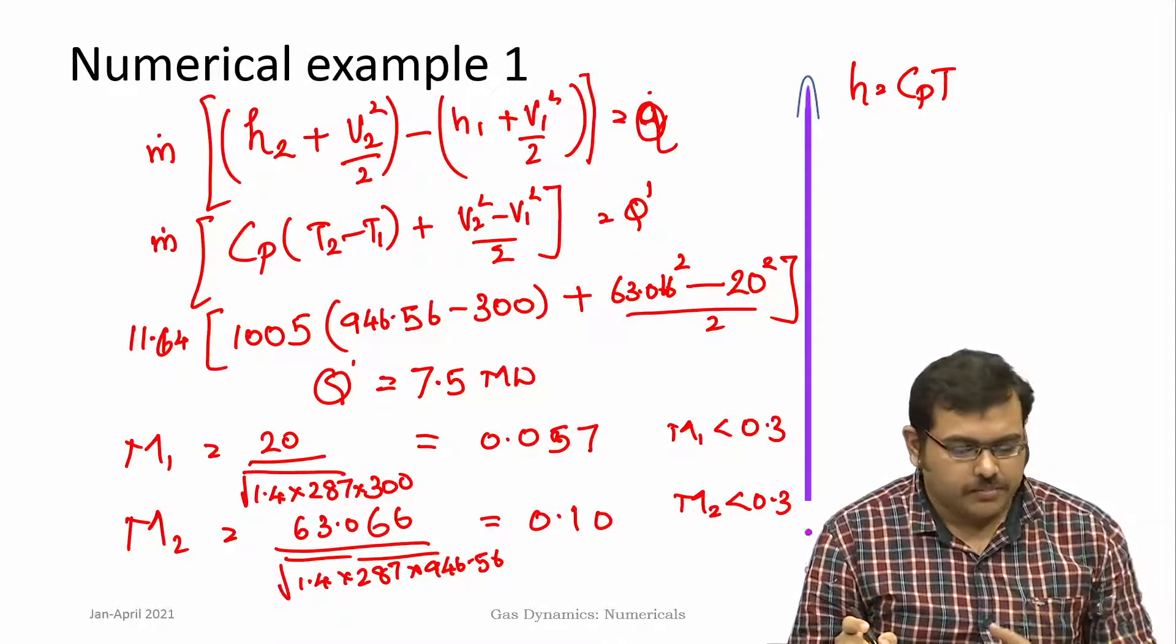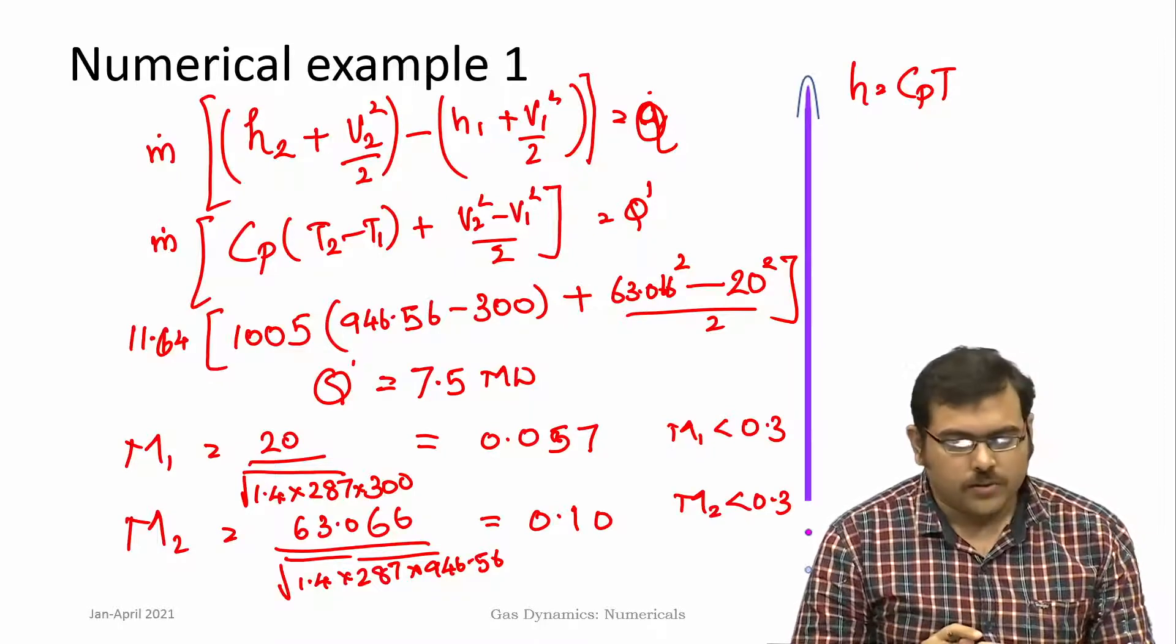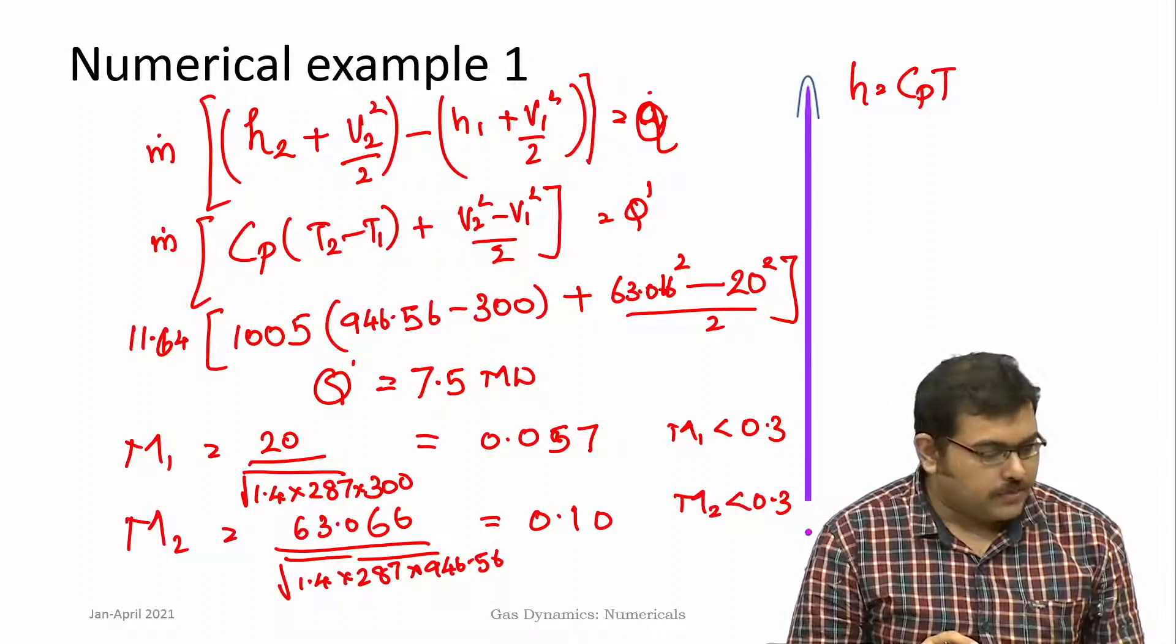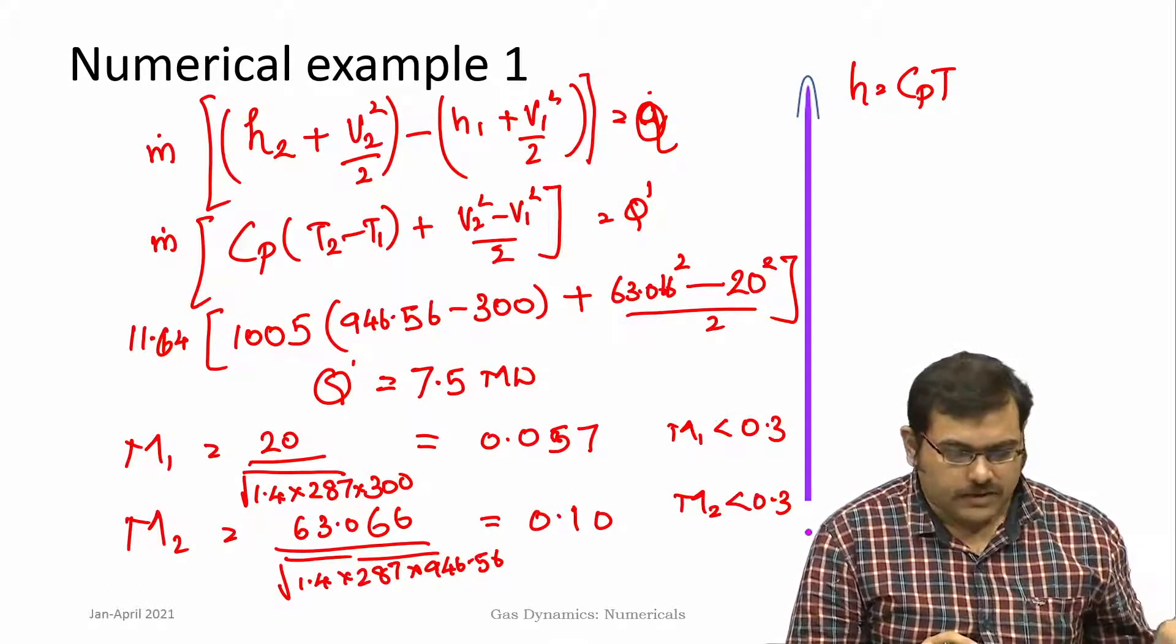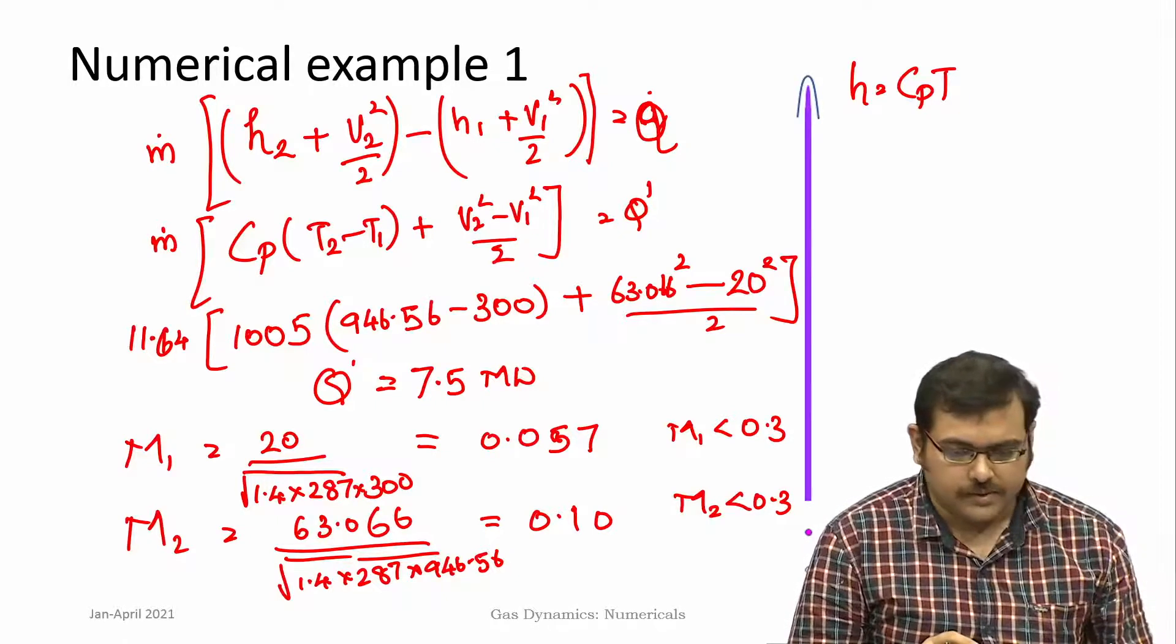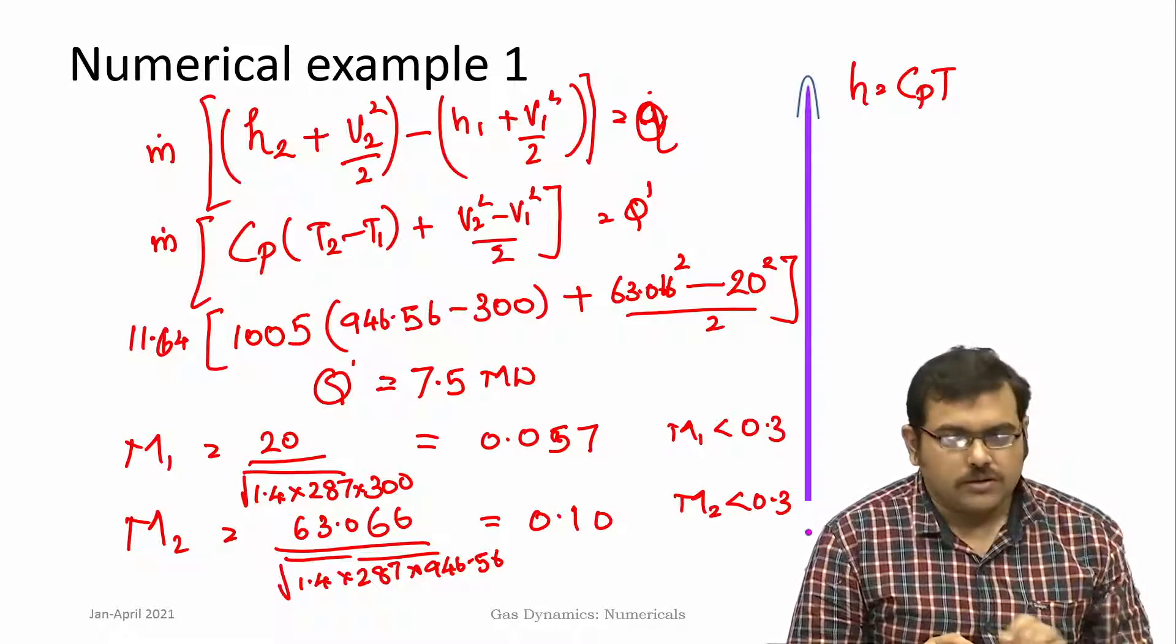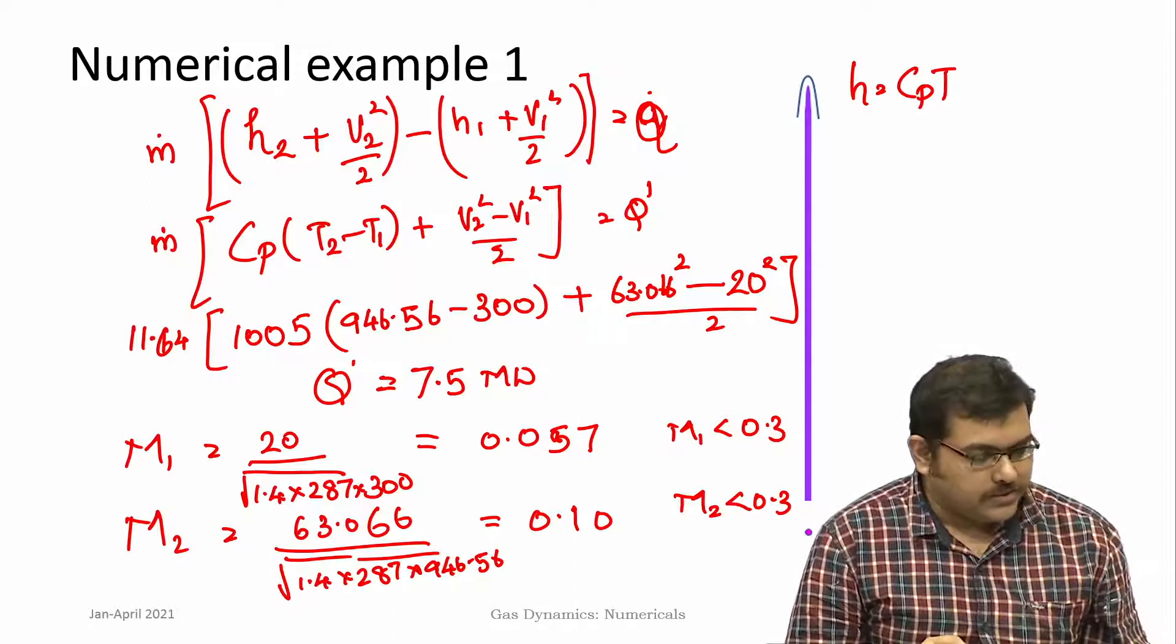This example considers different concepts. It applies the quasi 1D relations, combinations of conservation of mass, momentum and energy, as well as the thermodynamic principles of ideal gas law. We are able to complete this solution. This applies all the different concepts that we had learned in the previous sections.